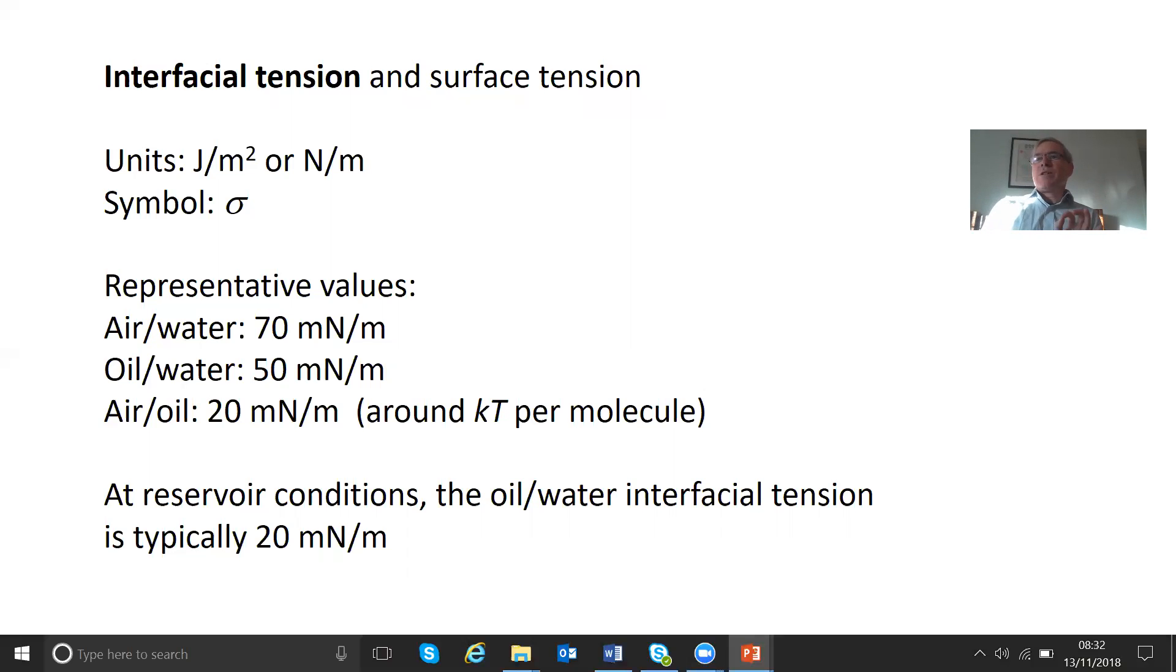Now let's look at some representative values. These are not the precise values. In fact, deliberately, they're not the precise values. If you want to know the exact value, you can Google it. But air and water is about 70 millinewtons per meter. Oil and water is about 50 and air and oil 20.